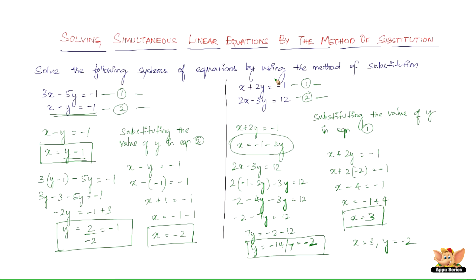So solving these two equations, we get the values of x and y as 3 and minus 2 respectively. This ends these problems as well as this video. This is the method of substitution — solving simultaneous linear equations by the method of substitution. It's a pretty simple method. I'll see you in the upcoming videos with more methods to solve simultaneous linear equations.